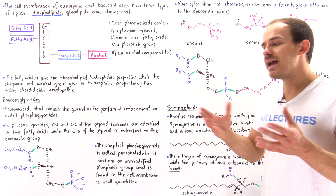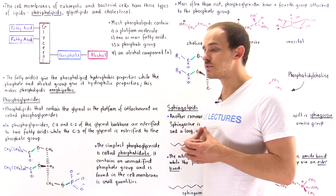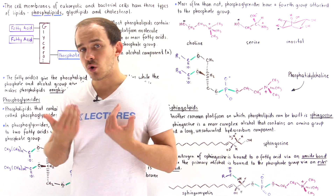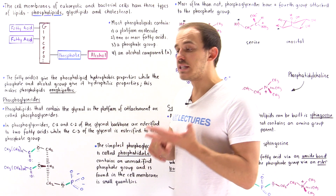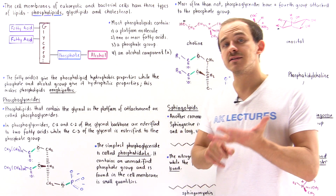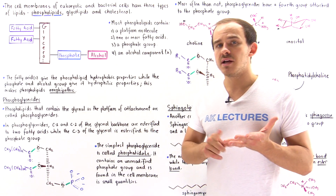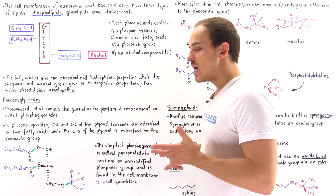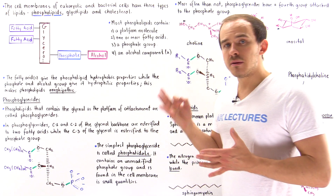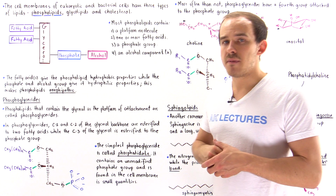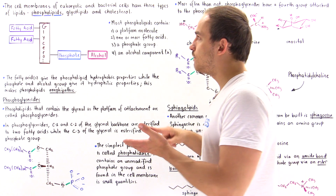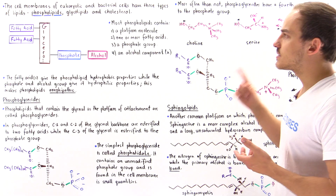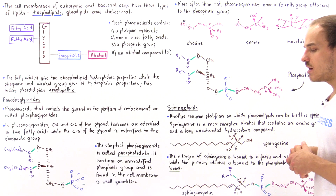Although we have many different types of lipids that exist in nature, the lipids we're going to focus on are the lipids found in the cell membranes of eukaryotic cells as well as bacterial cells. There are three lipids found in cell membranes: phospholipids, glycolipids, and cholesterol molecules.